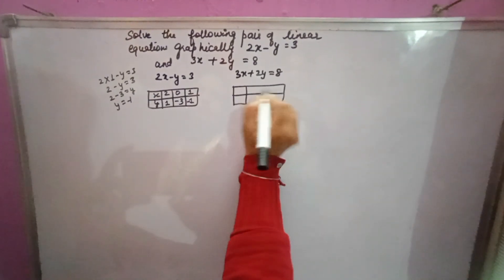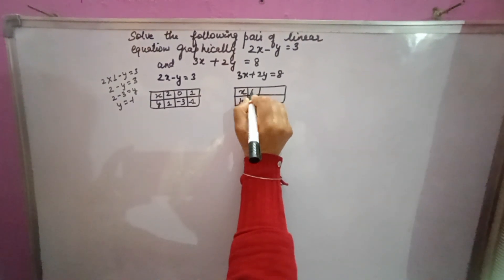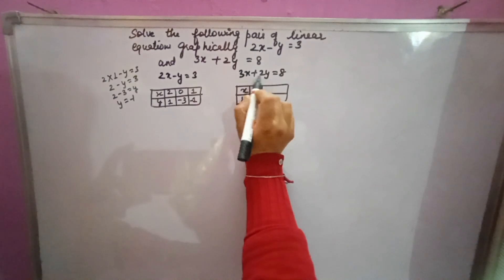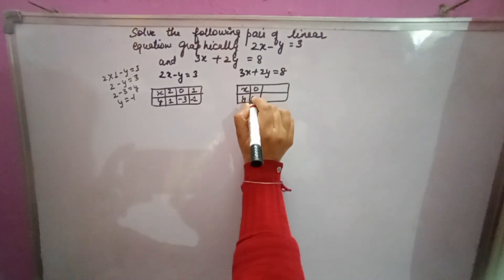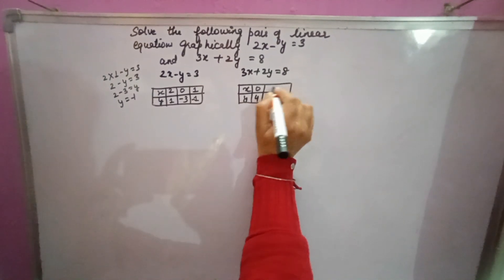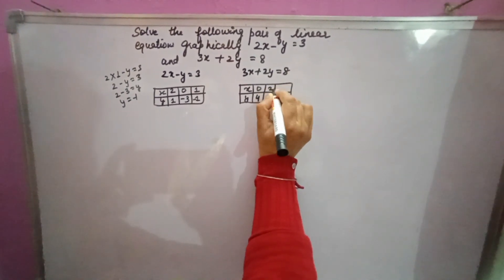Now here also you will take a table. x value suppose 0. 3 times 0 is 0. 2y equals 8. y will come 8 over 2, that is 4. First value. Second, suppose x you are taking 2.